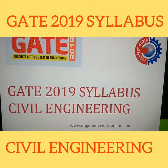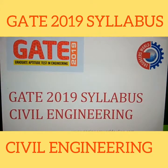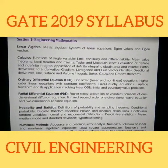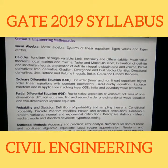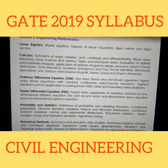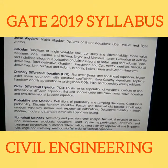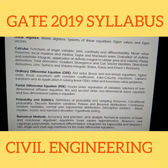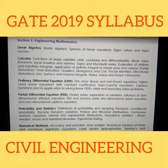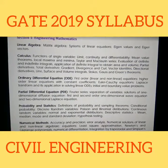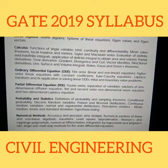This is the GATE 2019 Syllabus for Civil Engineering. You can see this is the syllabus for Engineering Mathematics. It is Section 1, which includes Linear Algebra, Calculus, Ordinary Differential Equations, Partial Differential Equations, Probability and Statistics, and Numerical Methods. Here is a look at the syllabus for GATE 2019.